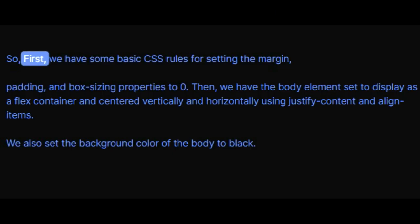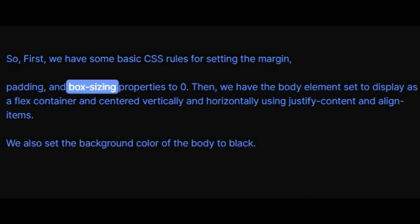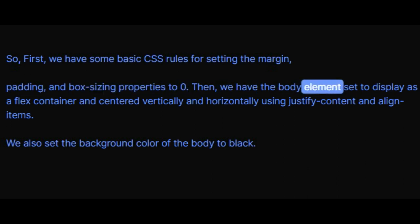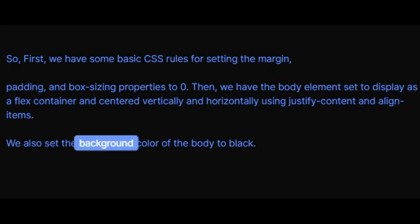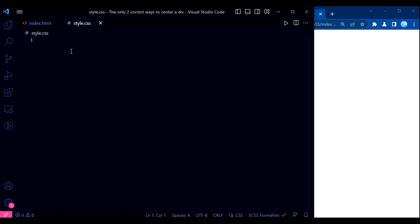First, we have some basic CSS rules for setting the margin, padding, and box-sizing properties to zero. Then we have the body element set to display as a flex container and centered vertically and horizontally using justify-content and align-items. We also set the background color of the body to black.